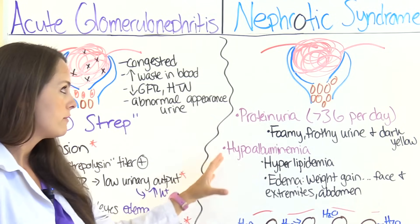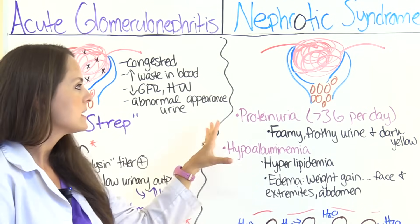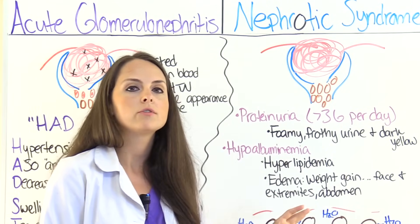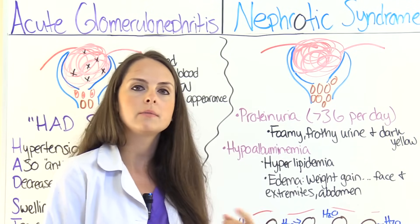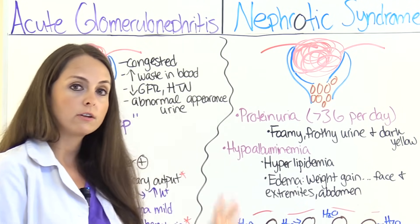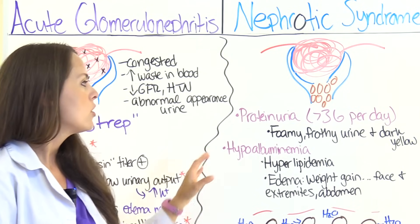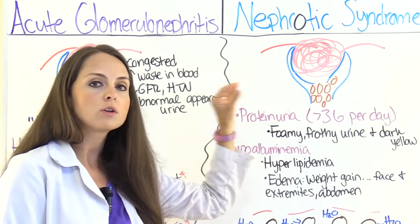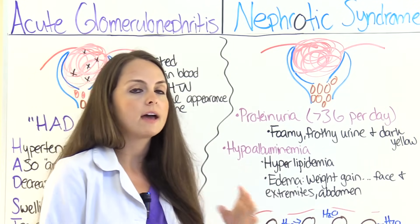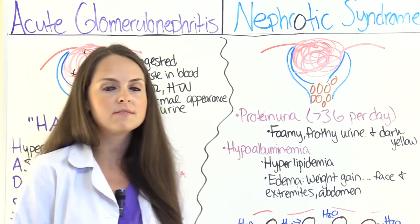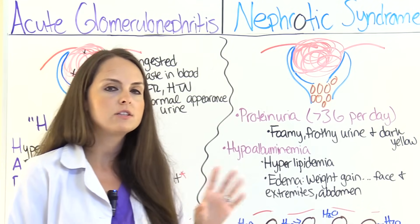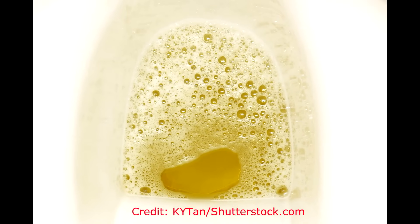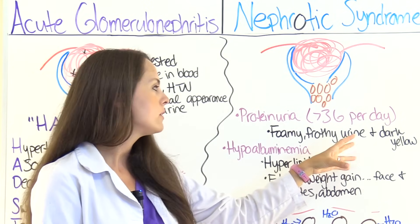Now let's look at nephrotic syndrome signs and symptoms. We're losing massive amounts of proteins — mainly albumin — but we can also lose proteins that help fight infection and decrease clot formation. Patients will have massive proteinuria, losing three grams or more of protein per day, which is a lot. Because of that, the urine can be foamy and frothy with a dark yellow color.